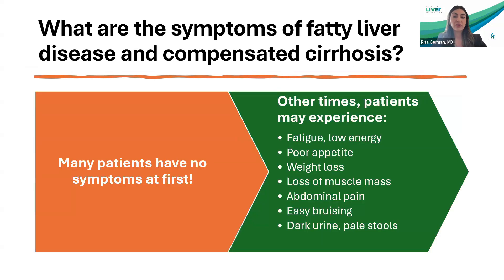Let's turn our attention to some symptoms of fatty liver disease. The problem with liver disease is that it's often pretty asymptomatic — a silent disease that patients don't know they have. Some symptoms patients may experience early on include fatigue or low energy, low appetite, weight loss, and loss of muscle mass. You can sometimes develop abdominal pain, easy bruising, and dark urine or pale stools. Those may be later signs, and it's important that if there's any suspicion of liver disease, your primary care doctor is looking into it.